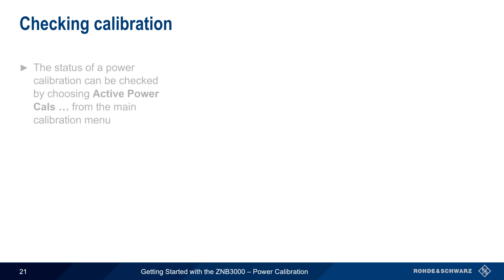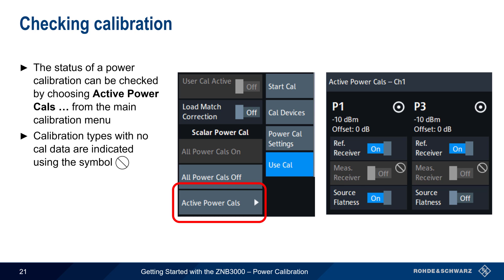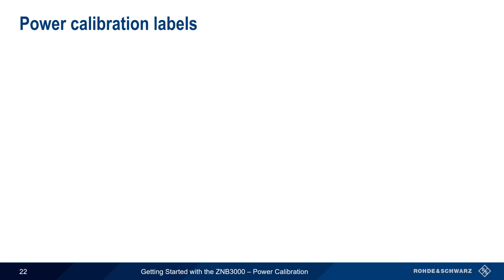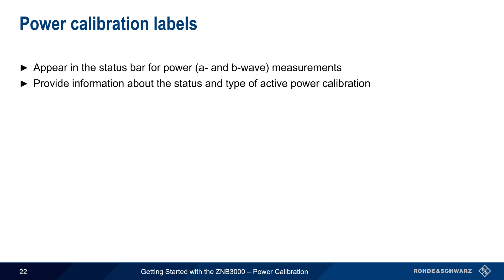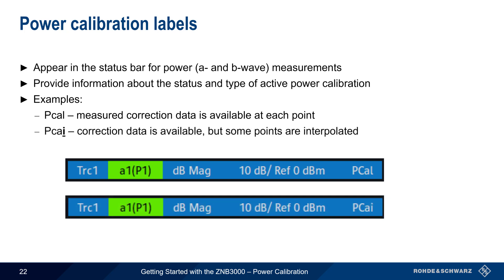Once power calibration is complete, the status can be checked by going to the Calibration menu and selecting Active Power Cals. Calibration types with no calibration data are indicated using a symbol, and an active power calibration can be individually activated or deactivated via this dialog. Power calibration labels appear in the status bar for any power or wave type measurements. For example, the label PCAL appears when measured correction data is present at each sweep point, while PCAI appears when interpolation is being performed. Please see the ZNB3000 documentation for a complete list of label types and meanings.